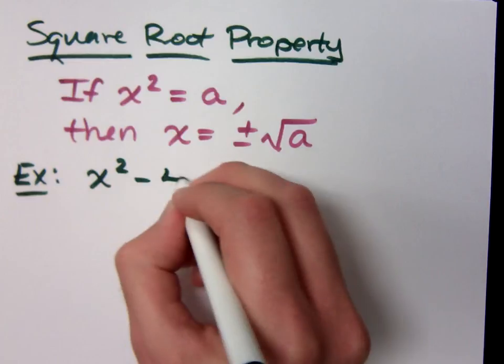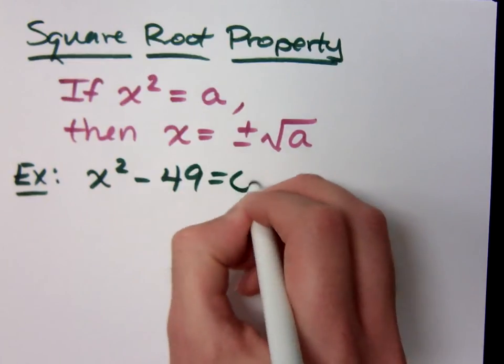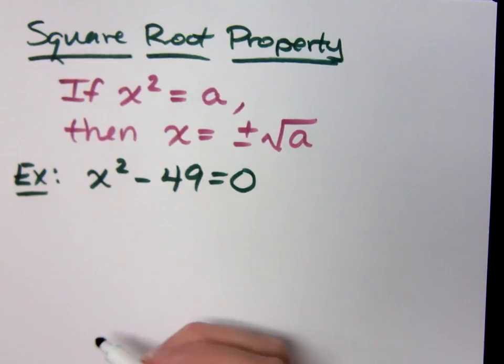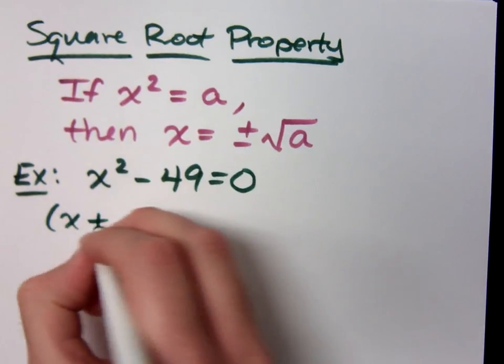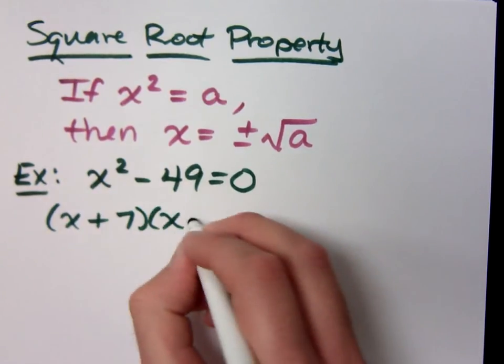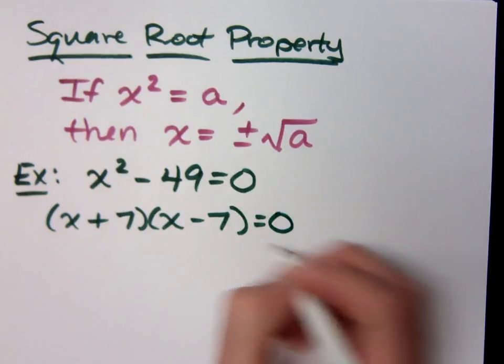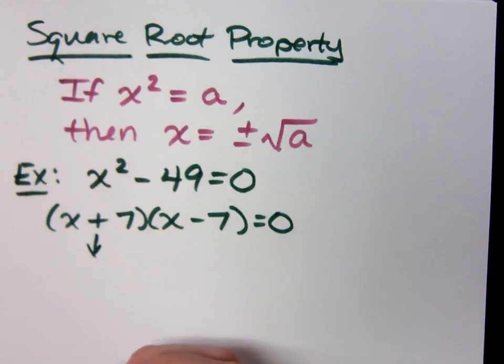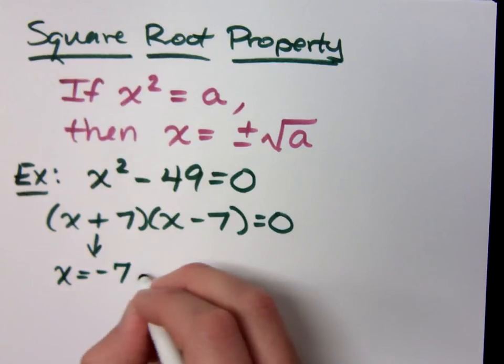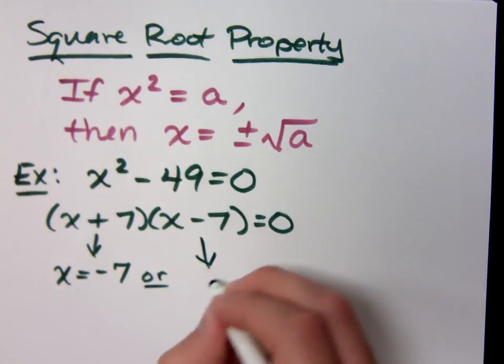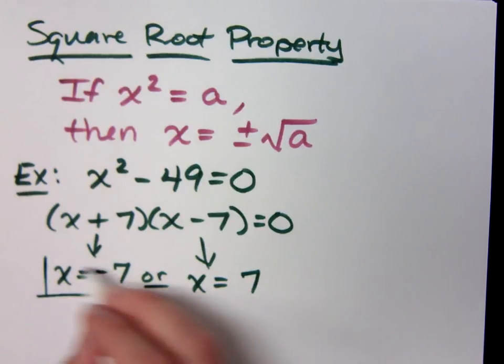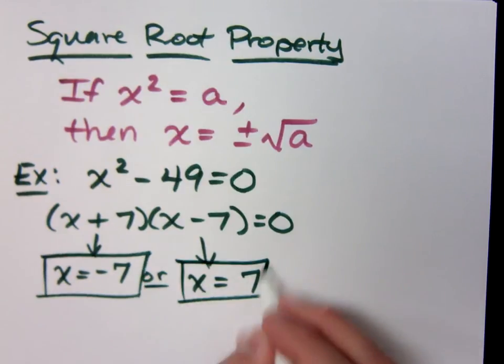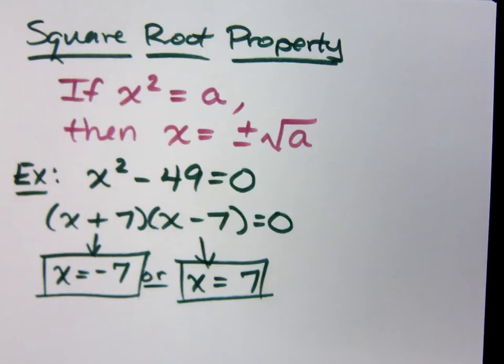For example, if I have x squared minus 49 is equal to zero, I hope that you guys could see that this is the difference of squares. And it factors as x plus 7 times x minus 7. And then what solutions would I get here? x equals negative 7 or x equals positive 7. I expected two solutions, and I got two solutions.